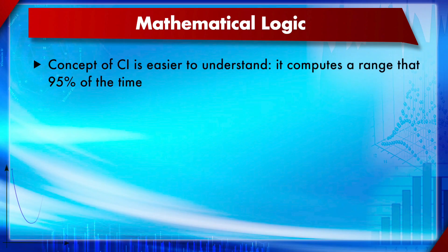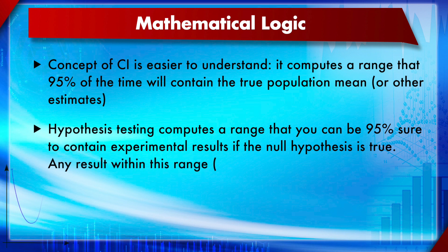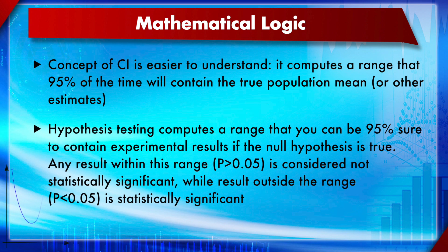The concept of confidence interval is easier to understand and more intuitive. It computes the range that 95% of the time will contain the true population mean or other estimates. Hypothesis testing computes a range that you can be 95% sure will contain experimental results if the null hypothesis is true. Any results within this range — that is, p-value higher than 0.05 — is considered not statistically significant, while results outside this range — p-value less than 0.05 — is statistically significant.